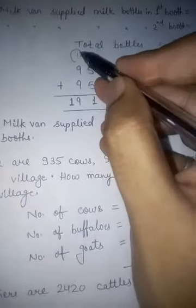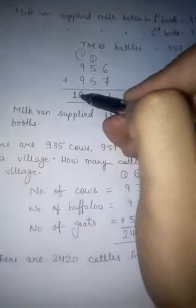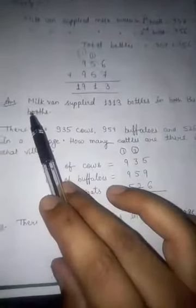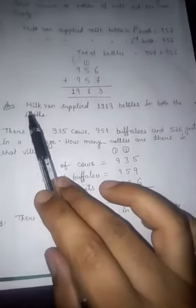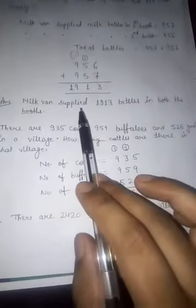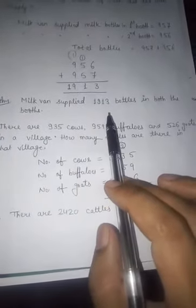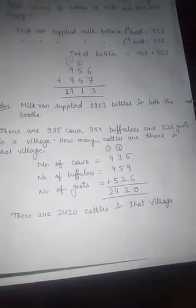9 plus 1 plus 9 is 19. So the answer in statement form: the milk van supplied 1913 bottles in both booths. This is the final answer.